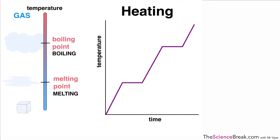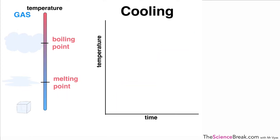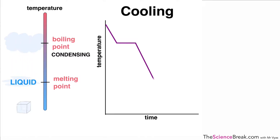A similar thing happens when we are cooling from gas all the way down to a solid. As we cool, we reach the boiling point and the gas turns into a liquid — the temperature stays the same until it's all turned into a liquid, and we call that condensing. The liquid then continues to cool, and at the melting point the liquid turns into a solid — the temperature stays the same until all the liquid has turned into solid, and we call that freezing.